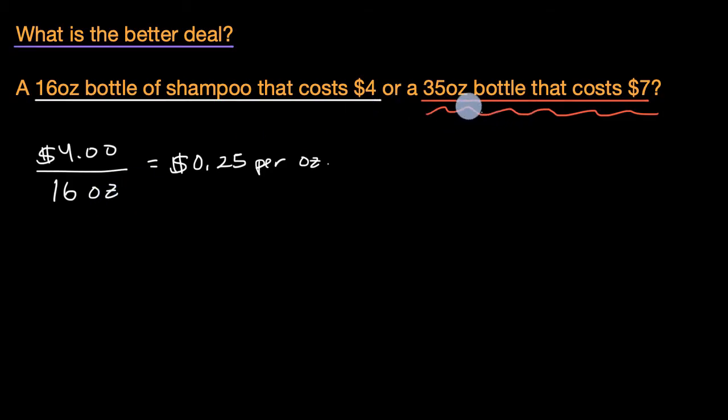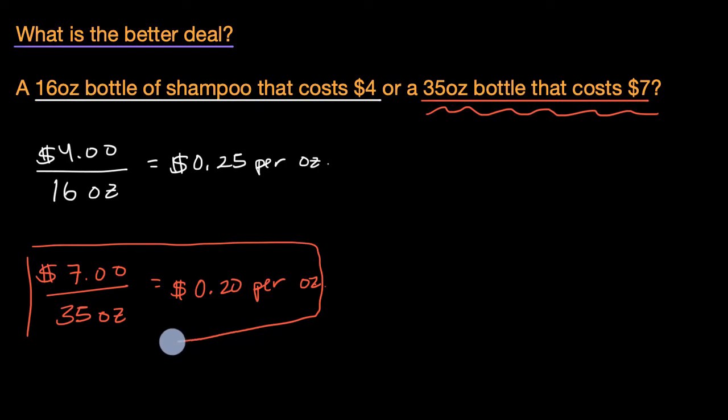The other situation right over here, if we took $7 divided by 35 ounces. If you do the math there, that is going to be 20 cents per ounce. And so here you're able to make an apples to apples comparison. You know where you're paying more or less per ounce. And we can see that our initial intuition was right. That the larger bottle here is indeed cheaper.